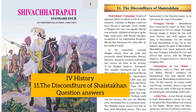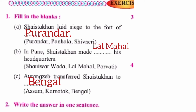Hello students, welcome to the channel. Today I shall be giving the answers of Chapter Number 11, The Discomfiture of Shahistakhan, from Standard Fourth. Let's begin with the exercise. Question One: Fill in the blanks. First, Shahistakhan laid siege to the fort of Purandar in Pune.